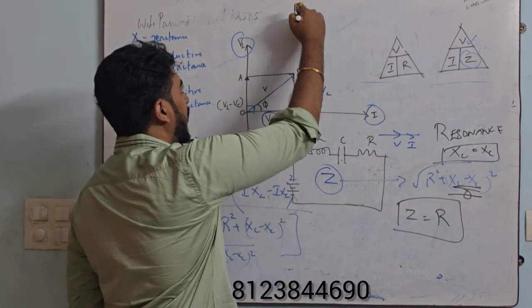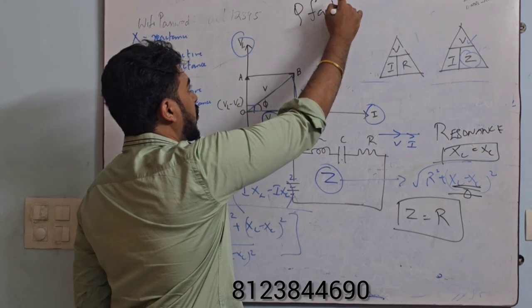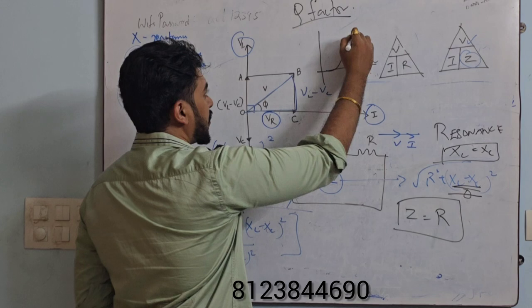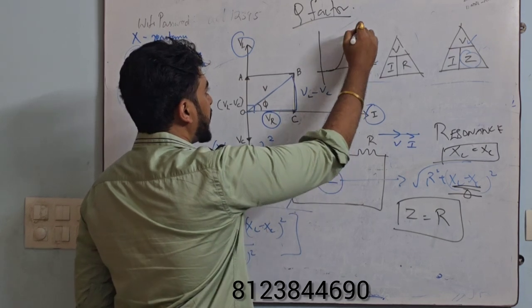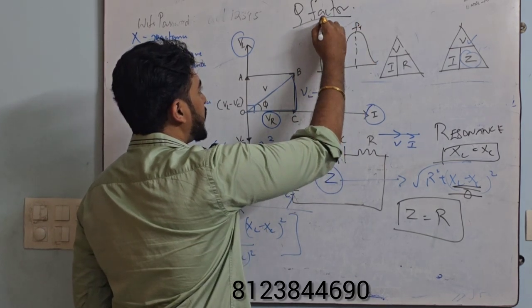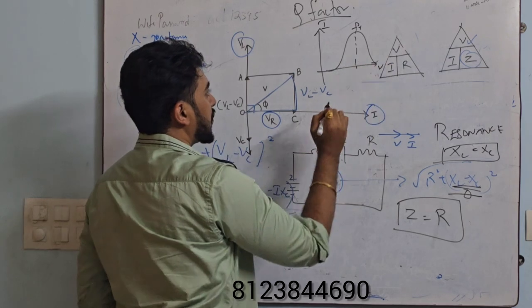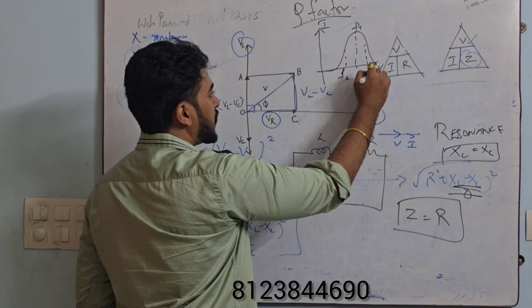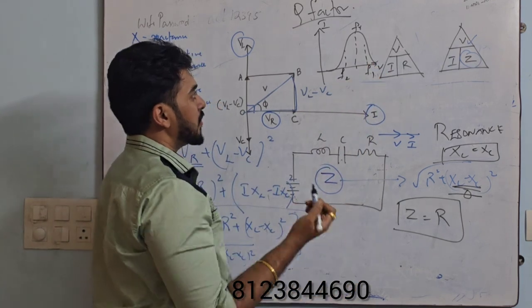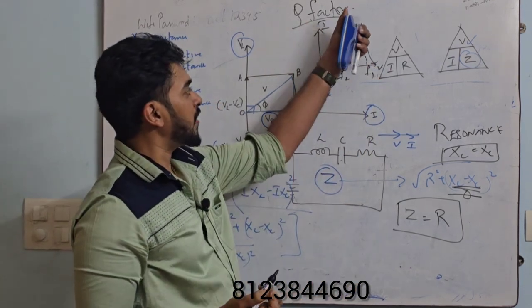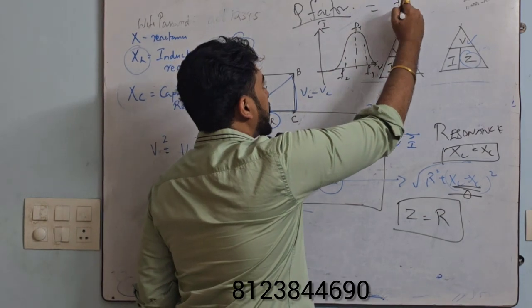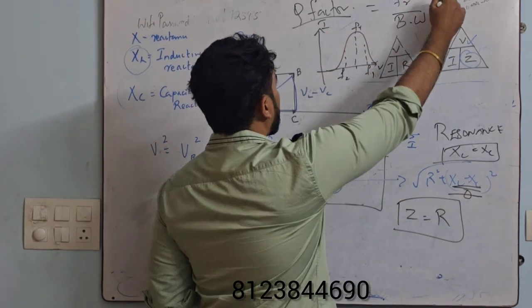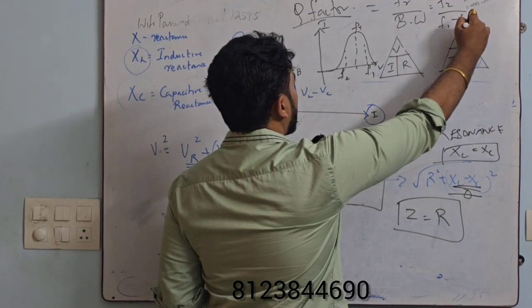Next small topic is the Q factor, quality factor. So for that, again draw a graph. This is the maximum frequency, this is my resonant frequency. I will put I and V here. And here also I will put two lines, this is my F1, F2. So quality factor is nothing but resonant frequency by bandwidth, which is FR/(F2 - F1).